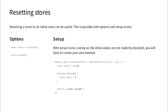So you've added a lot of information to your store and maybe you'd like to reset it. With Options Stores, this is rather easy. All you do is call $reset, and basically all of your State attributes will be reset to their default values.